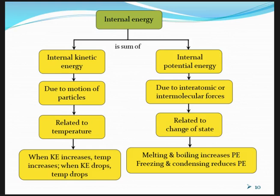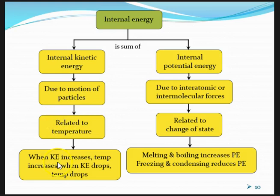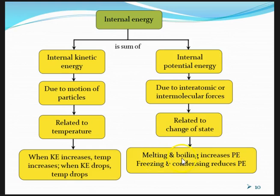That brings us to the end of this video. To summarize: internal energy of a substance is the sum of the internal kinetic energy and the internal potential energy of the substance. The internal kinetic energy is due to the motion of particles, which also affects the temperature of the substance — when kinetic energy increases, temperature increases, and when kinetic energy drops, temperature drops. For internal potential energy, this is due to the interatomic or intermolecular forces of attraction and is related to a change of state. During melting and boiling, there will be an increase in potential energy, and during freezing and condensing, there will be a reduction in potential energy of the substance.